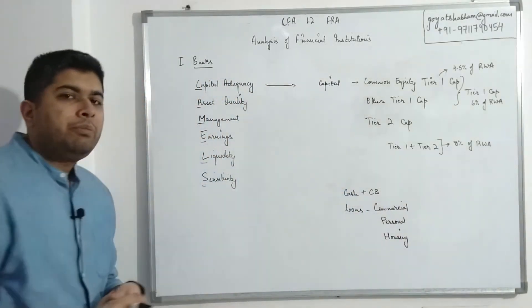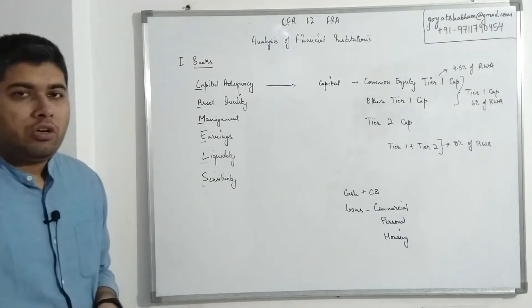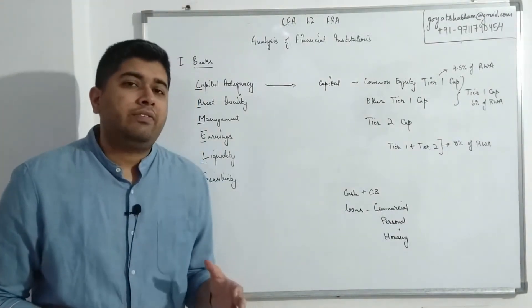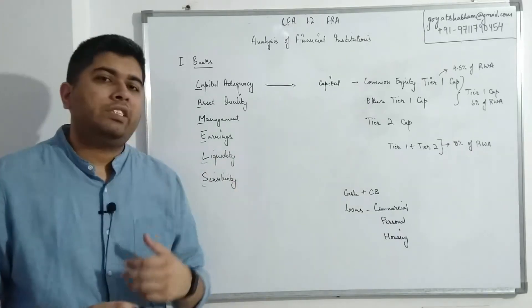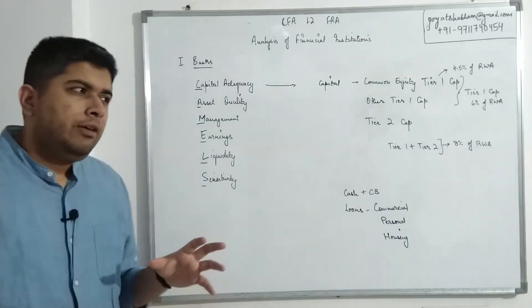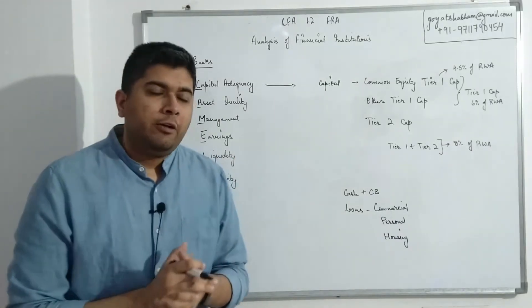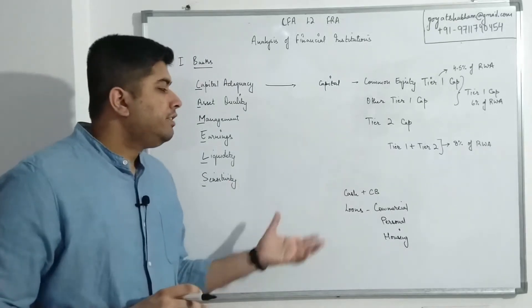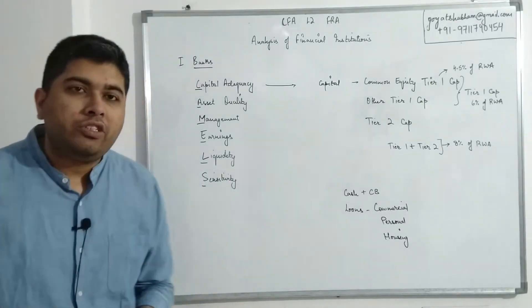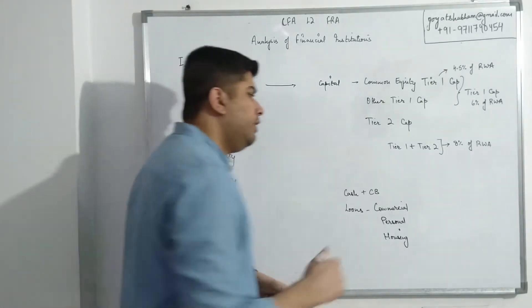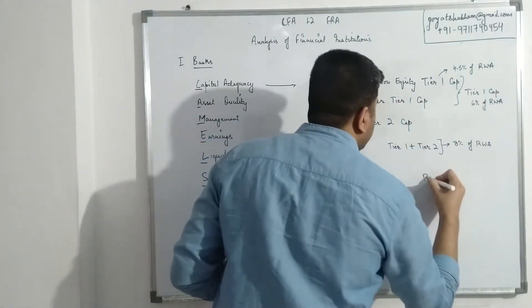Let's say you have a bank that has following assets: they have cash. Cash also includes deposits with central banks. So often banks have some money deposited with central banks. They might even borrow some money from central banks at times. The other kind of asset is normally loans. They have loans: commercial loans, personal loans, or housing loans.